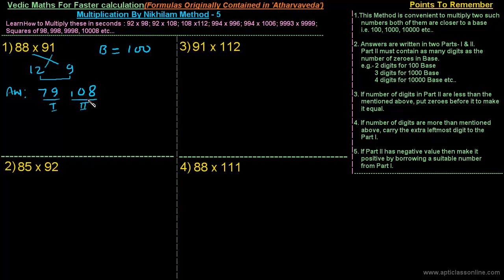The second part must contain as many digits as the number of zeros in the base. For numbers closer to base 100, the second part must contain only two digits. If the second part contains more than two digits, carry the extra leftmost digit to part 1.